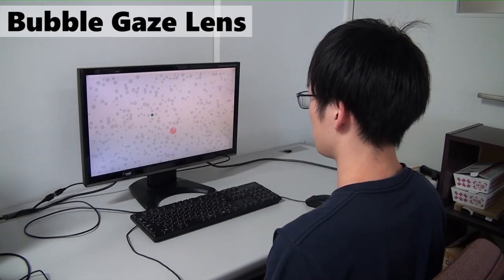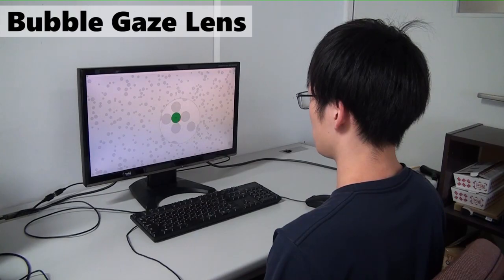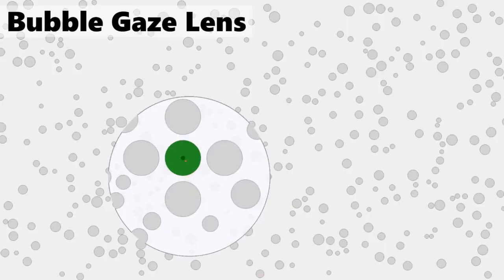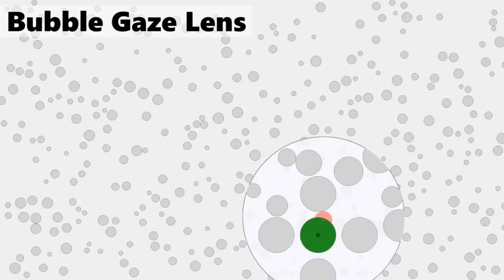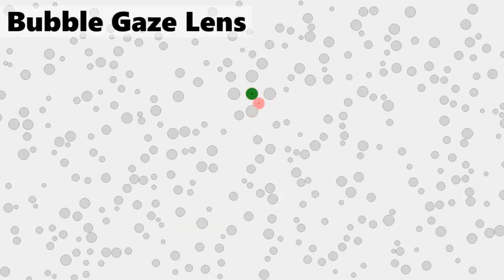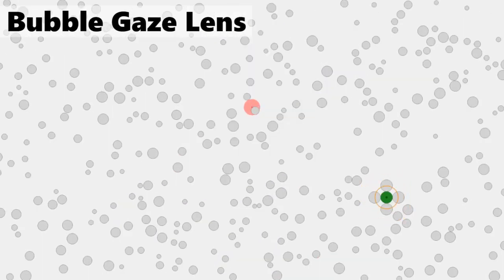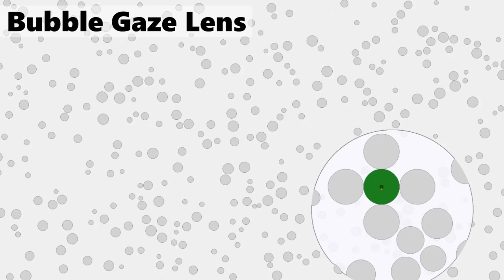The bubble gaze lens technique enlarges a small target by activating a magnifying lens when the cursor is close to the goal target, allowing for easy and quick selection.